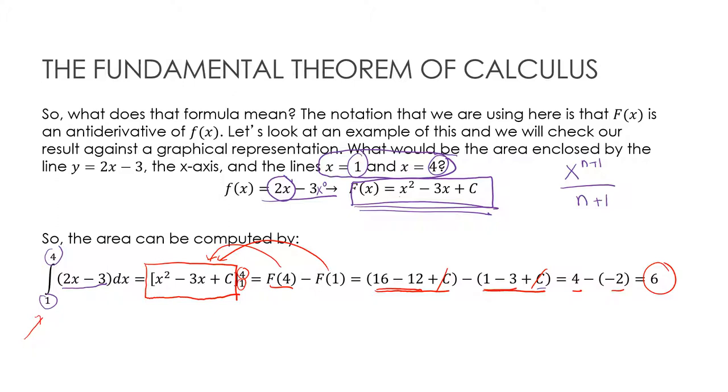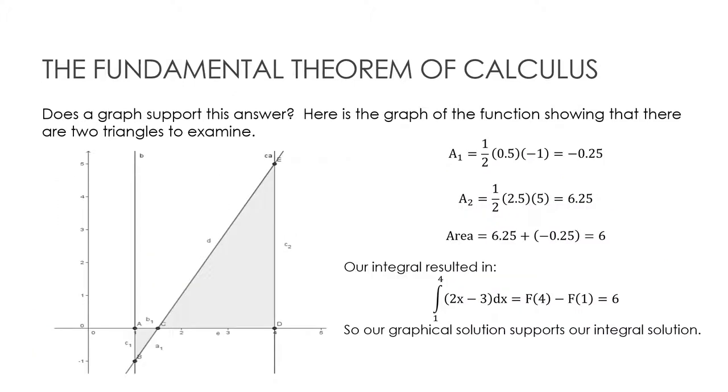That is the fundamental theorem of calculus. It is fantastic because I was able to integrate that so much more quickly than by using the limit definition or by finding some geometric figure that matched it. So let's look at the graph to see if it supports our answer. Here's my function, and from 1 to 4, we had a little region. Area A1 was 1/2 times base (1/2) times height (1), negative area of 0.25, negative because it's below the x-axis. Then A2 was 1/2 times base (2.5) times height (5) = 6.25. When I add those together, I get 6, which is what I got with my other method.